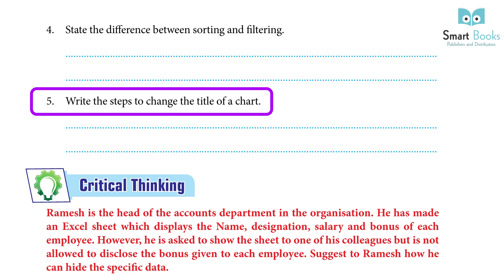5. Write the steps to change the title of a chart. Answer — Steps to change the title of a chart: 1. Click on the chart title. 2. Right-click on the chart title placeholder — the pop-up menu will appear. 3. From the pop-up menu, select the Edit Text option. 4. Add the new chart title and press the ESC key.